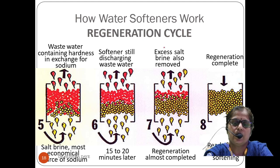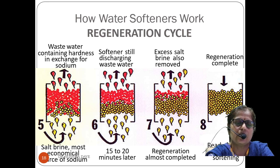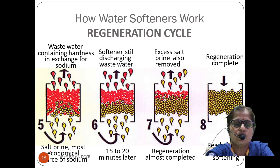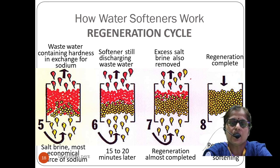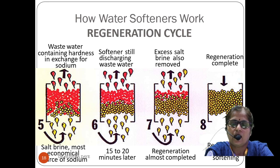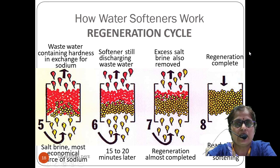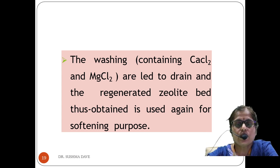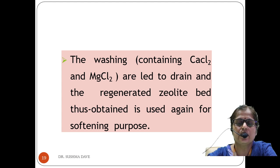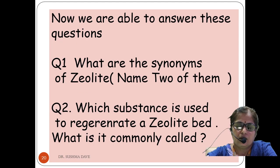In the pictorial presentation of regeneration, the red-black granular zeolite containing hardness ions is shown. Salt brine is added from the lower end, slowly regenerating all the active sites. Excess salt is also removed. After regeneration is completed, the zeolite bed is again ready for softening a new batch of water. The washings containing calcium chloride and magnesium chloride are led to drain, and the regenerated zeolite bed is reused for softening.